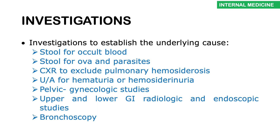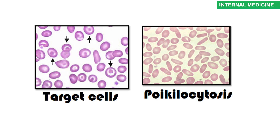Other investigations target the underlying cause: stool for occult blood and ova and parasites (to check for bleeding and hookworm infestations), chest X-ray to exclude pulmonary hemosiderosis, urinalysis for hematuria or hemoglobinuria, pelvic ultrasound to check for fibroids or gynecological problems, and upper and lower GIT radiological and endoscopic studies, as well as bronchoscopy in some cases. This is what target cells look like — and here you can see poikilocytosis.